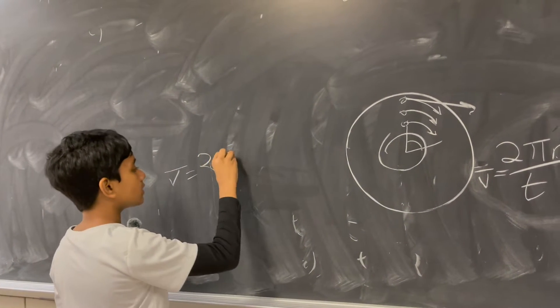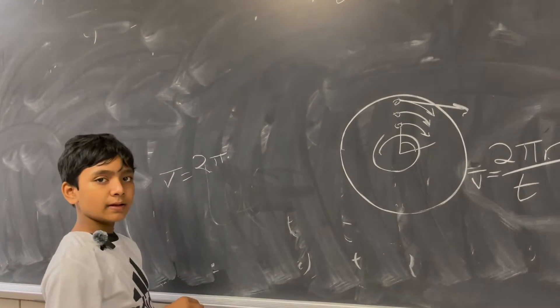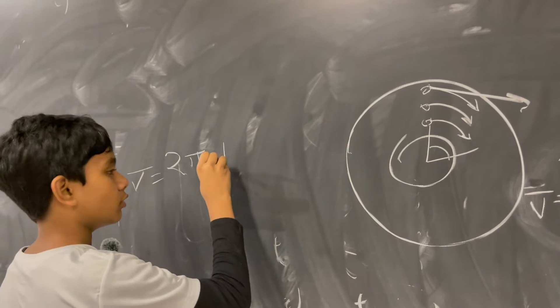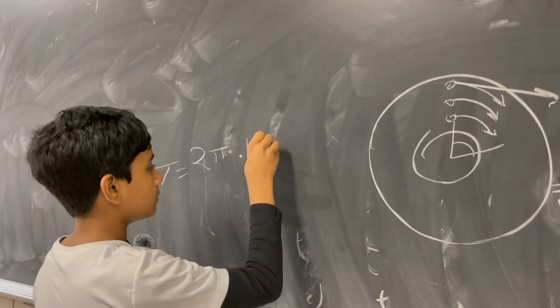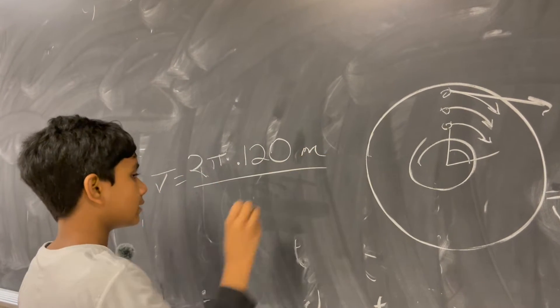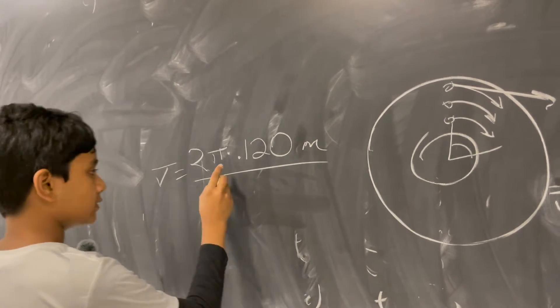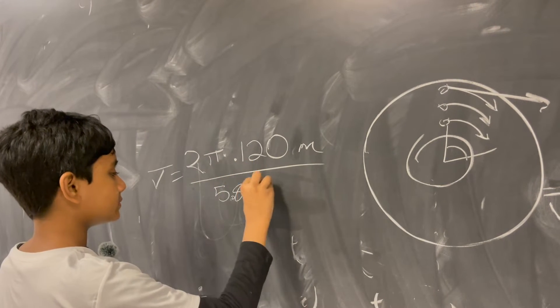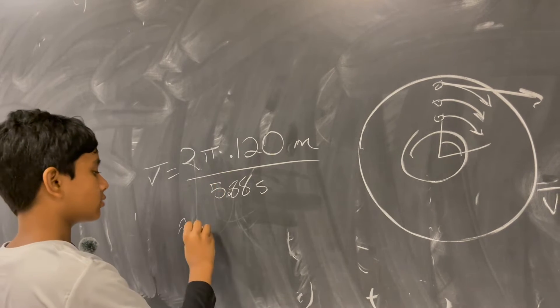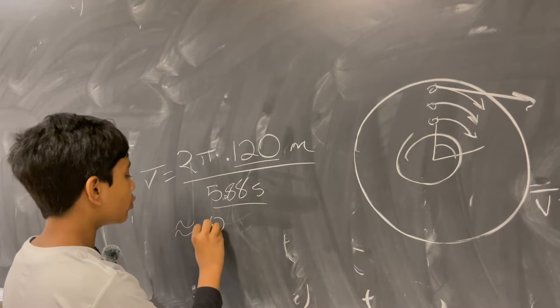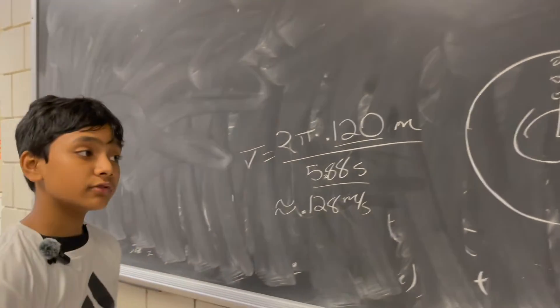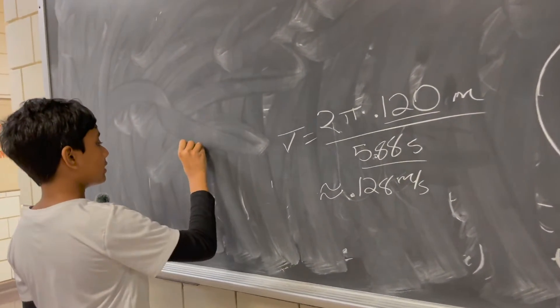So that's 2 pi times, our meter stick went up to millimeters in accuracy, so we're going to go 0.120 meters divided by the time, which was 5.88 seconds, which gives rise to approximately, we're only doing this to three sig figs, 0.128 meters per second, and that's the tangential velocity.